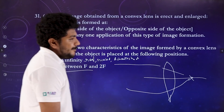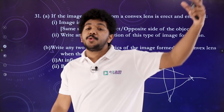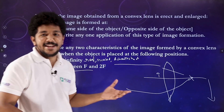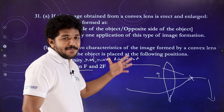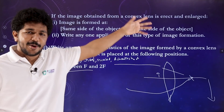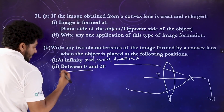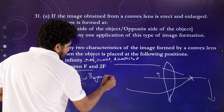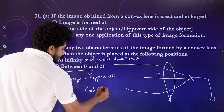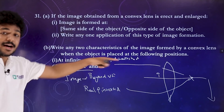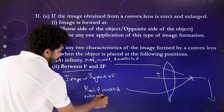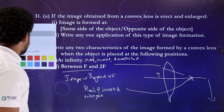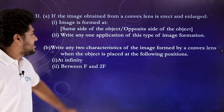When the object is between F and 2F, the image is formed beyond 2F — it is real and inverted, and enlarged. When the object is beyond 2F, the image is formed between F and 2F — it is real, inverted, and diminished.